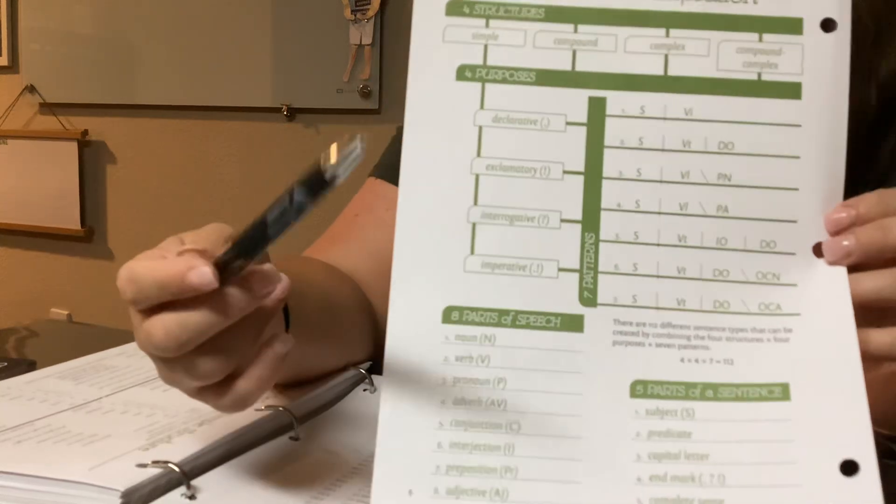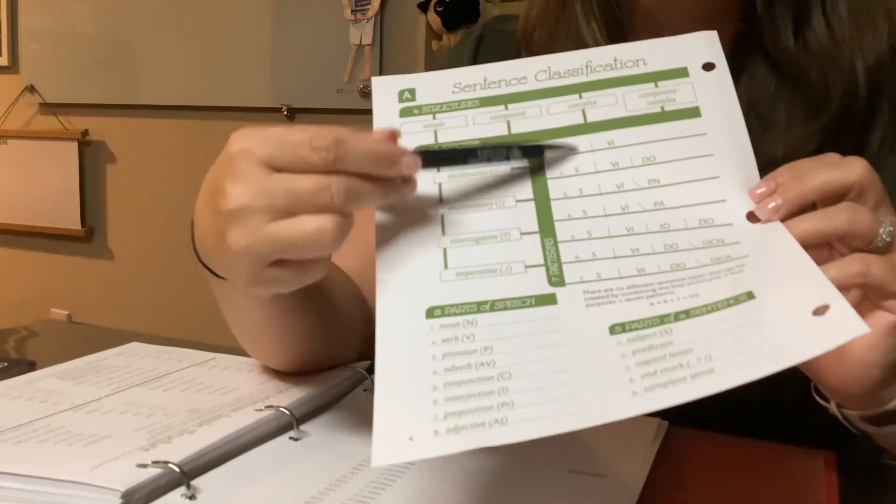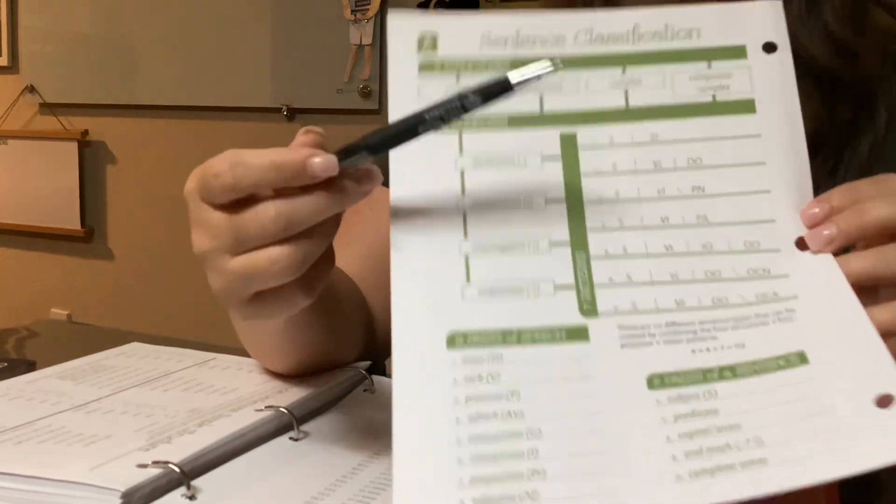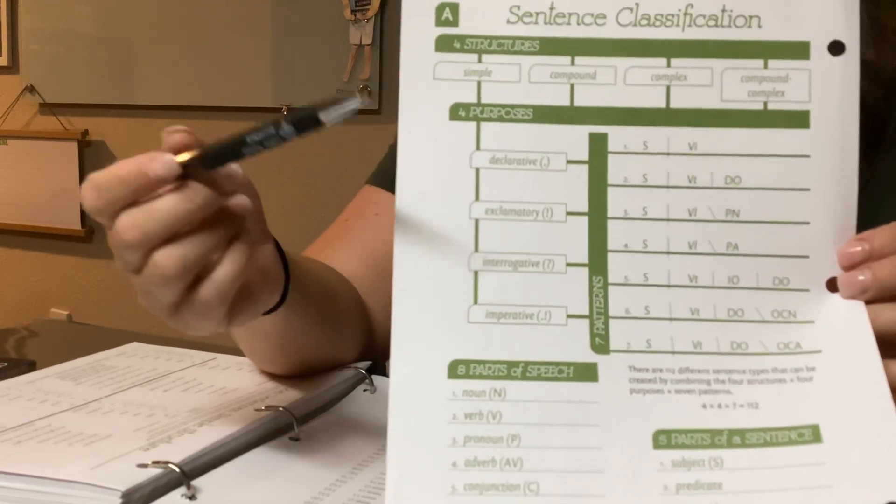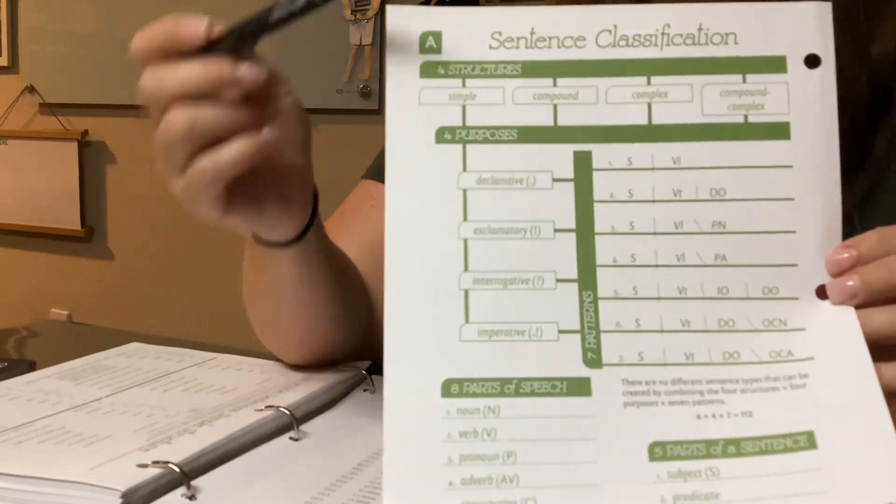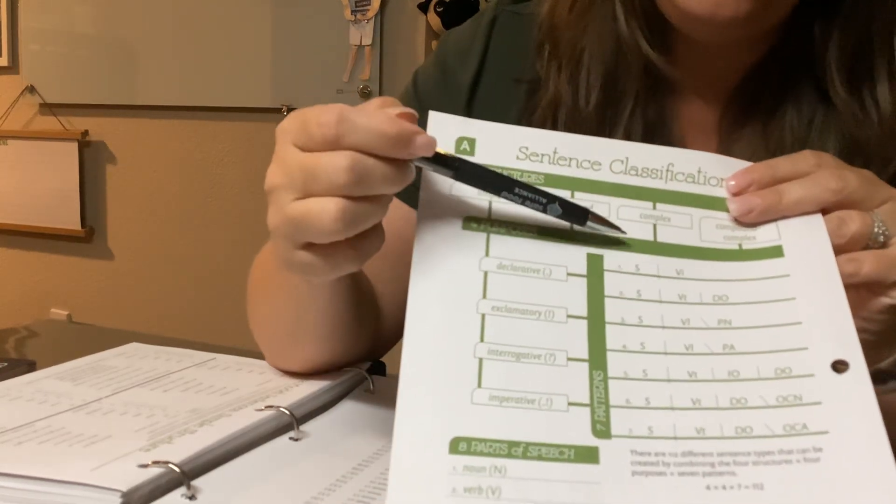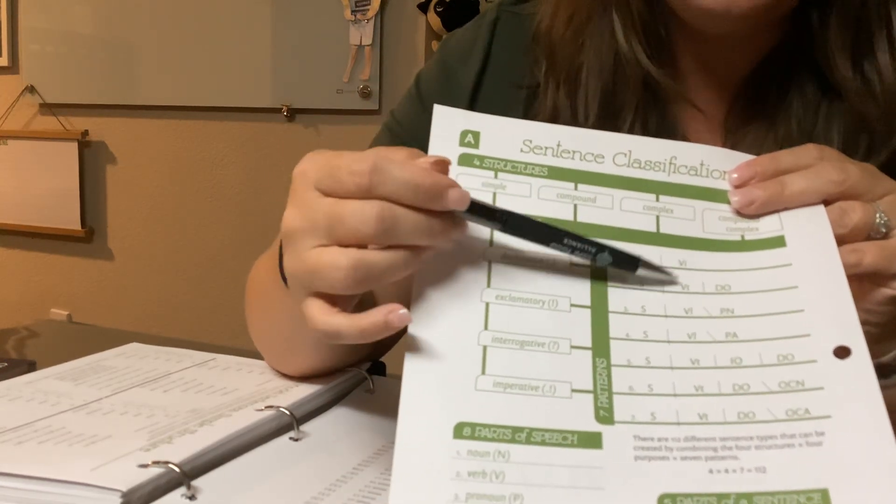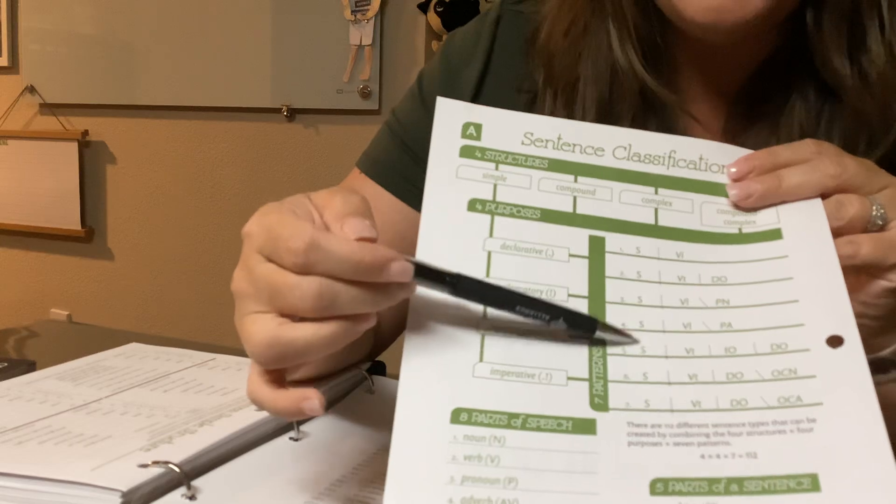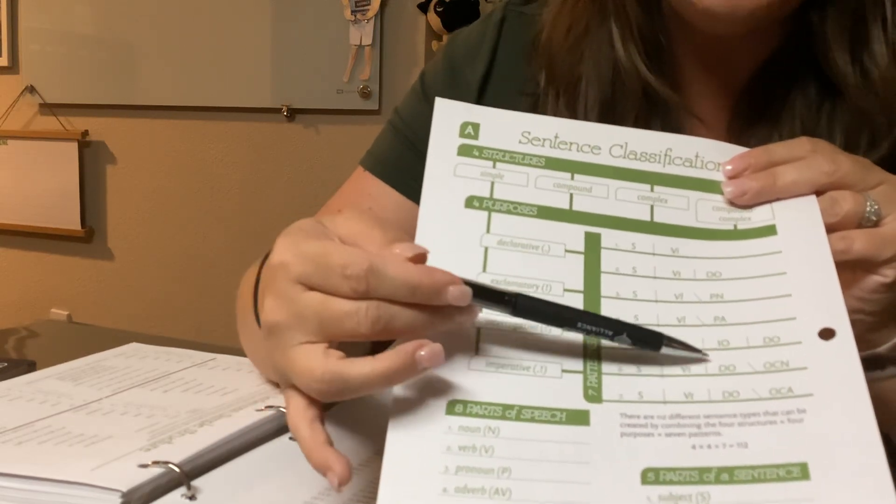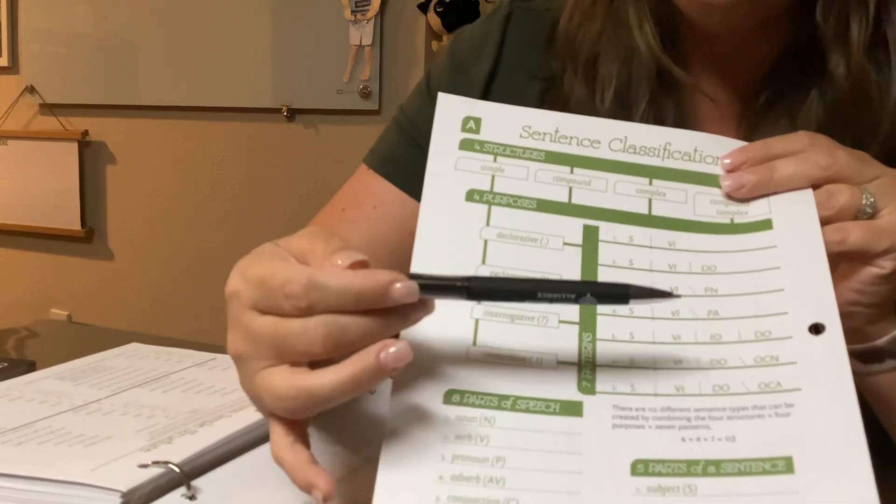That probably makes no sense to anybody on their first tour, and that's okay. At the end of this class, you will know what all of these mean. For now, we just need to learn the seven sentence patterns. So it's to the tune of Three Blind Mice. I am not a singer, so consider yourself warned. But this is what you're going to practice singing. S-V-I-S-V-T-D-O-S-V-L-P-N-S-V-L-P-A-S-V-T-I-O-D-O-S-V-T-D-O-O-C-N-S-V-T-D-O-O-C-A. We sing it every day.